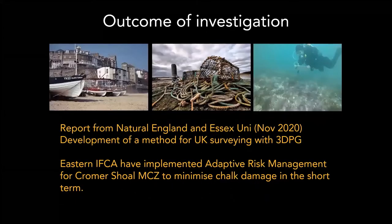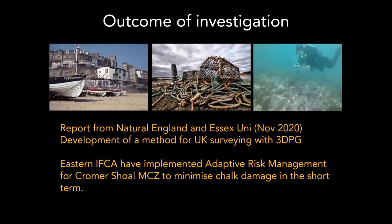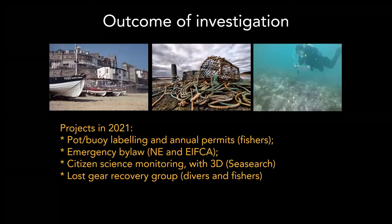The report was published at the end of last year — it took a long time because of extensive checking and extra information being added. It instigated quite a lot of action: in particular, the Eastern IFCA implemented an adaptive risk management approach for the Cromer Shoal MCZ to minimize chalk damage in the short term. The IFCA said that if they didn't do something, they would close the fishery — a fishery that's been around for generations. In the next few weeks there will be an emergency bylaw requiring inshore fishermen to have an annual permit and to label their pots and buoys.